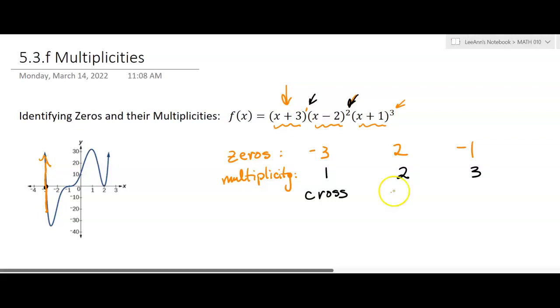When it has an even multiplicity, so if it's like 2 or something, then it's going to bounce, but sometimes they'll say touch. It's going to bounce off the x-axis or touch the x-axis. So at 2, and remember that's the 0, 2, it's coming down here, and it's not crossing, but it's bouncing off it, and then it's going to go back up.